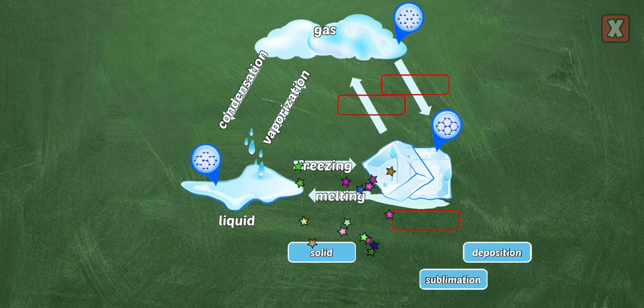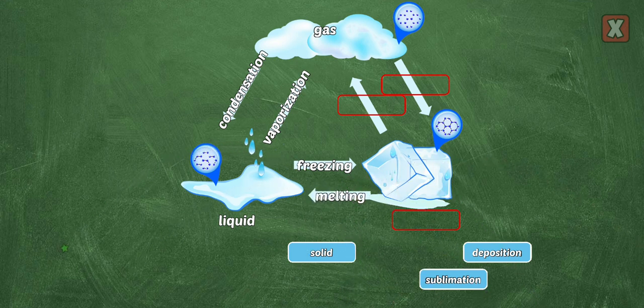Melting is when a solid turns into a liquid. When heat is added, the molecules move faster.